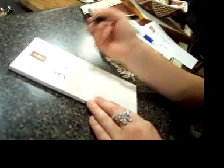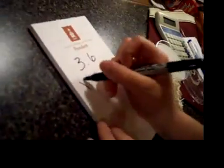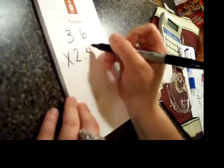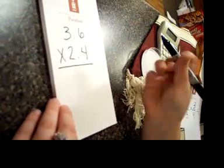For our multiplication of decimals, we don't have to use the base ten pieces. We can create our problem and simply do it on a pad of paper. So, say we take the problem 3 and 6 tenths times 2 and 4 tenths.